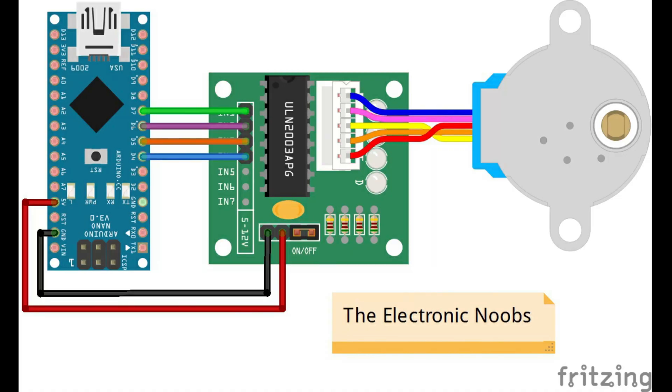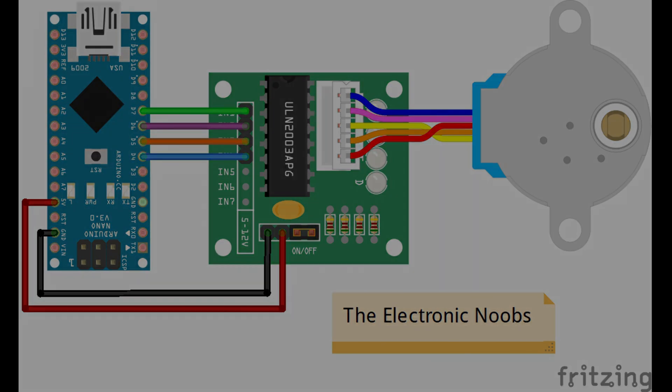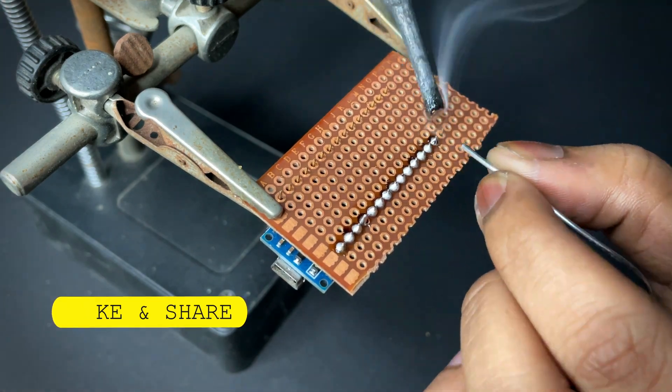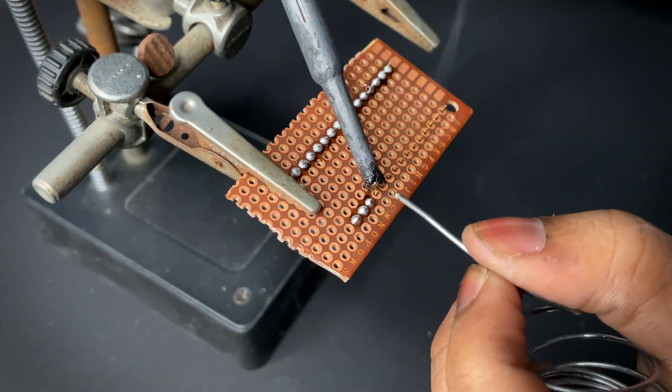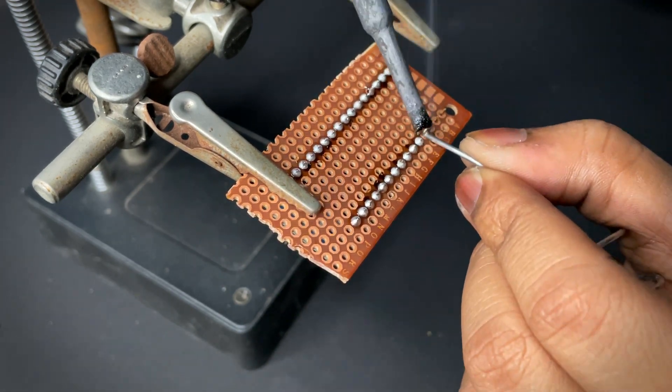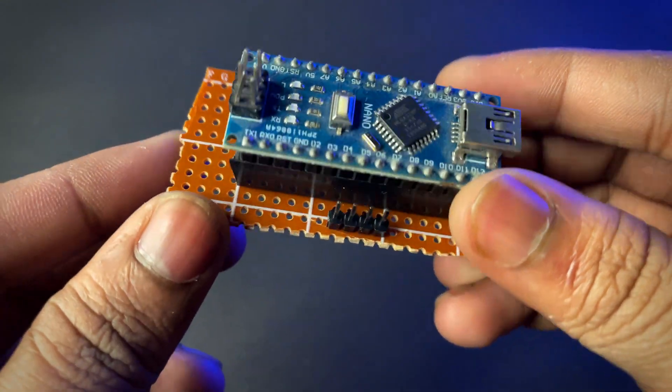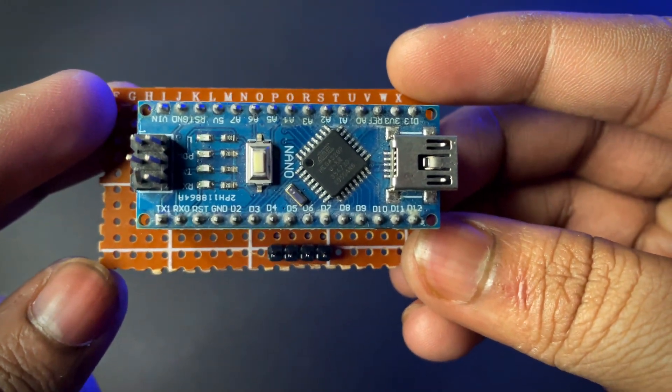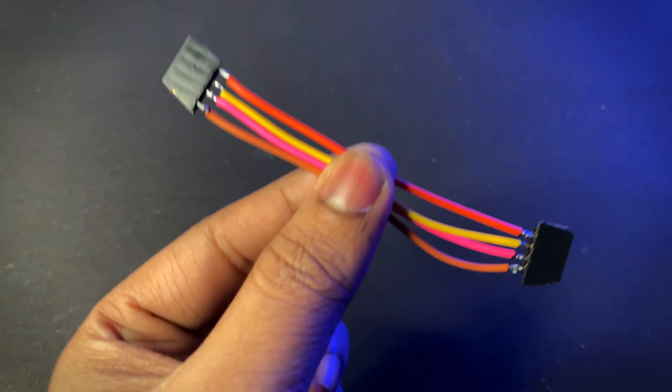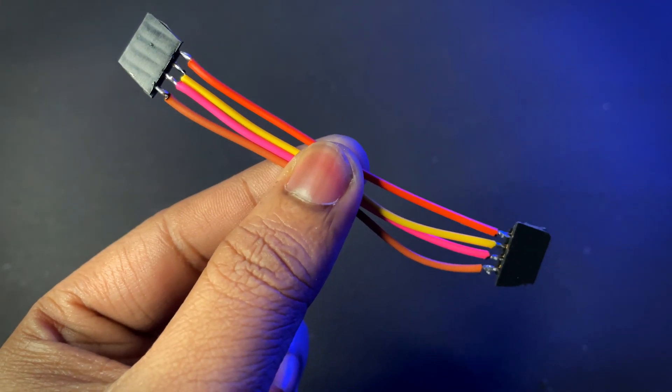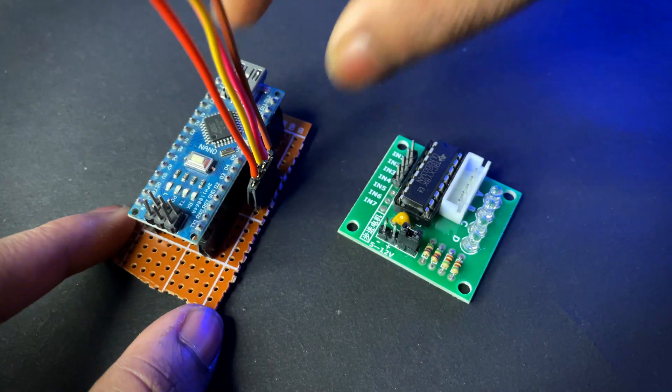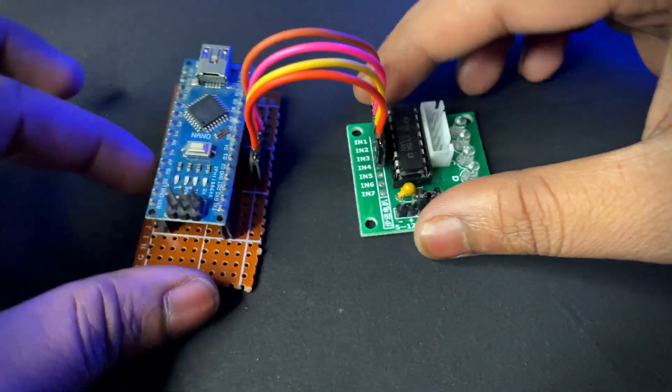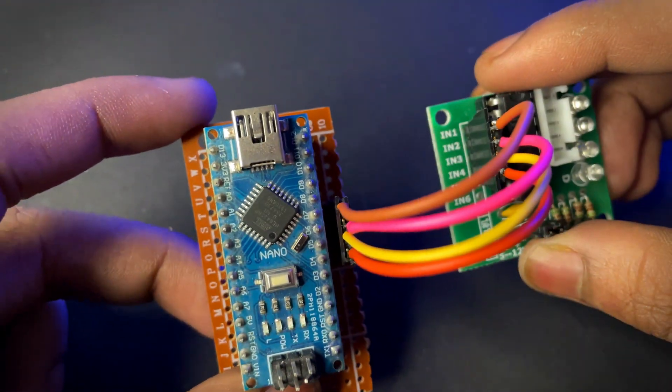This is the circuit diagram given in the description. Now solder the component accordingly. You need this kind of wires for the motor driver. Connect the port to D7 of Arduino.